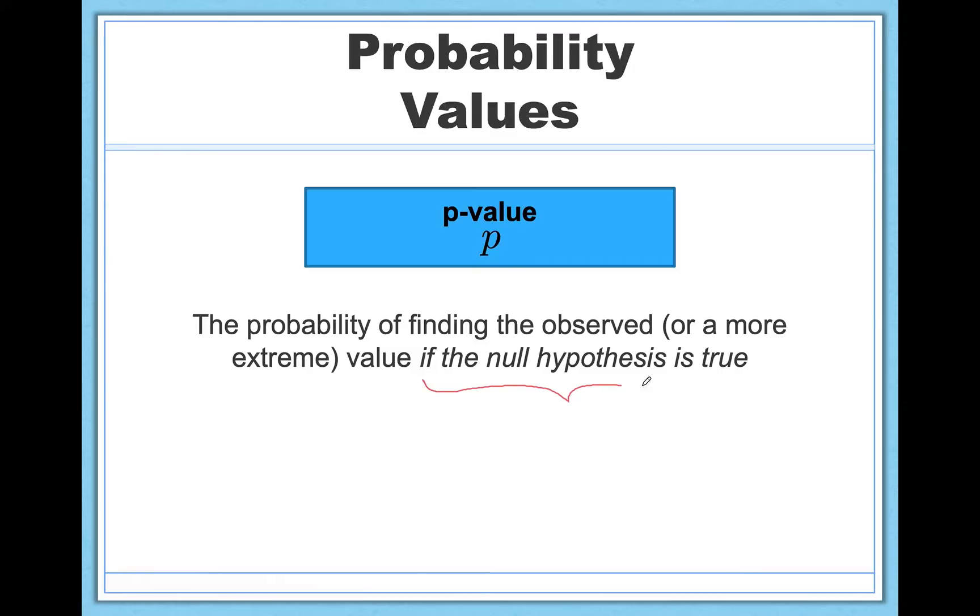So the probability of finding the observed or a more extreme value if the null is true. Remember, break it down when there's a lot of jargon. If the null hypothesis is true, this is akin to saying there's actually no effect in the world. So think back to the neuro IQ example.